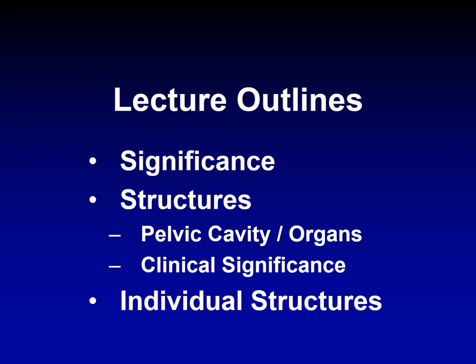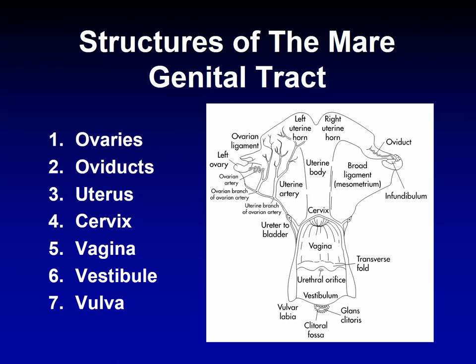In this lecture we'll talk about the individual structures that form the reproductive system in the female and the clinical significance for each. We have the ovaries, the oviduct, the uterus — including the uterine horns and body — then the cervix, the vagina, the vestibule, and the vulva.